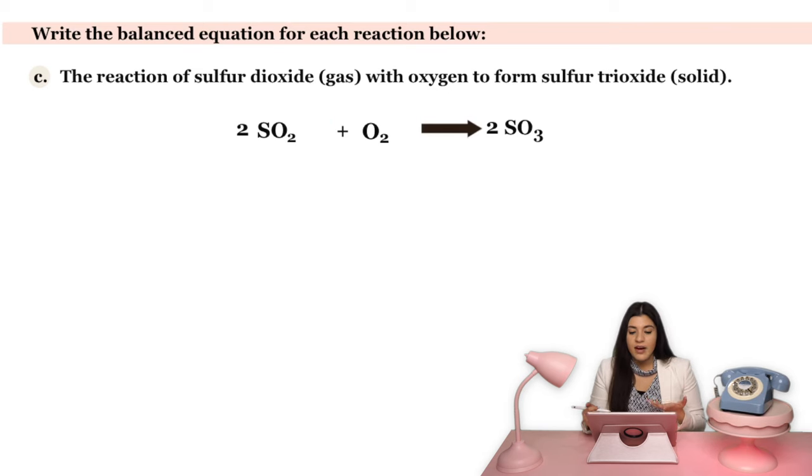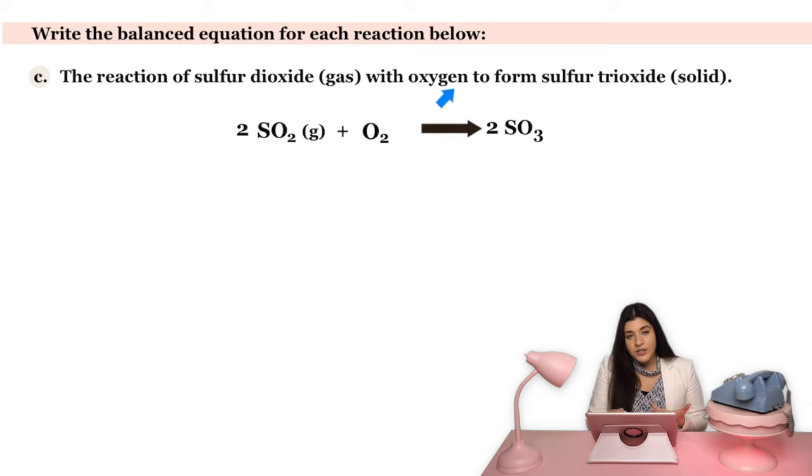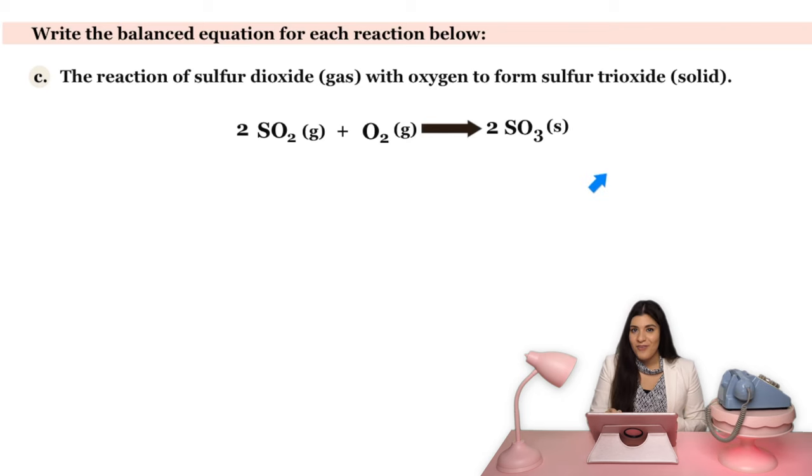Now that we have this balanced, the next thing is just identifying all of our different states. Luckily, this question told you. It told you that sulfur dioxide is a type of gas. So I know that's how I'm going to label it. Next, it is known that diatomic molecules tend to be gases. So oxygen or hydrogen or some sort of halogen, those are types of gases. So this is going to be a gas. And then lastly, this tells you that sulfur trioxide is a type of solid. And this is how we get our final answer.